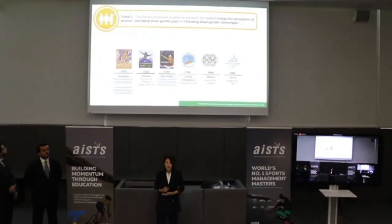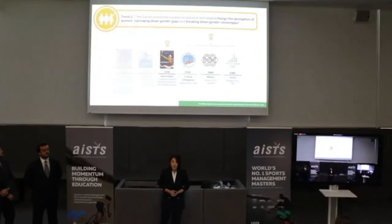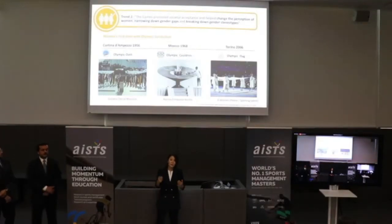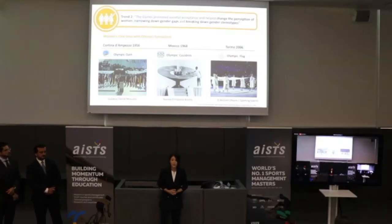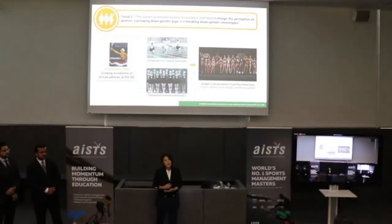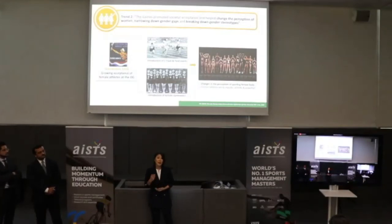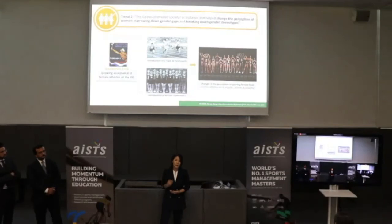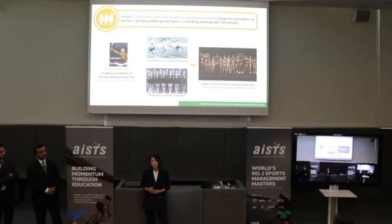Trend two is about changing perceptions and breaking down gender stereotypes, covering legacies from Stockholm to Torino. Olympic firsts created history: from Cortina to Torino, we have representative female athletes swearing the Olympic oath for the first time, lighting the cauldron, and carrying the Olympic flag. In early years, it was commonly agreed that women should only take moderate exercise. In Amsterdam 1928, women were allowed to participate in track and field and artistic gymnastics for the first time, leading to changes in perception — that females are as capable, athletic, and powerful as their male counterparts.